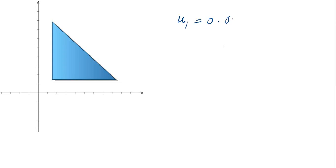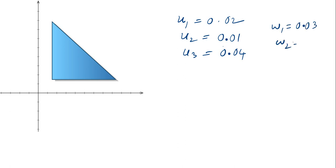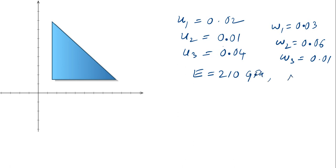This is a problem based on an axisymmetric element. You need to find the element stresses for the given figure. The nodal displacements are given: U1 = 0.02, U2 = 0.01, U3 = 0.04 (all in millimeters). W1 = 0.03, W2 = 0.06, W3 = 0.01. Young's modulus E = 210 GPa, and Poisson's ratio mu = 0.25. The axes are R and Z.